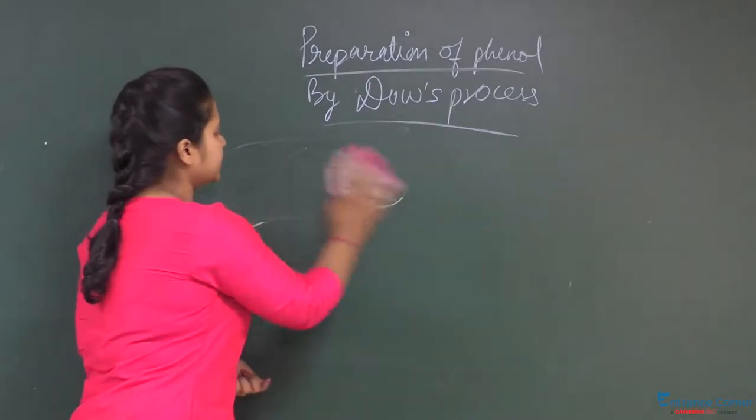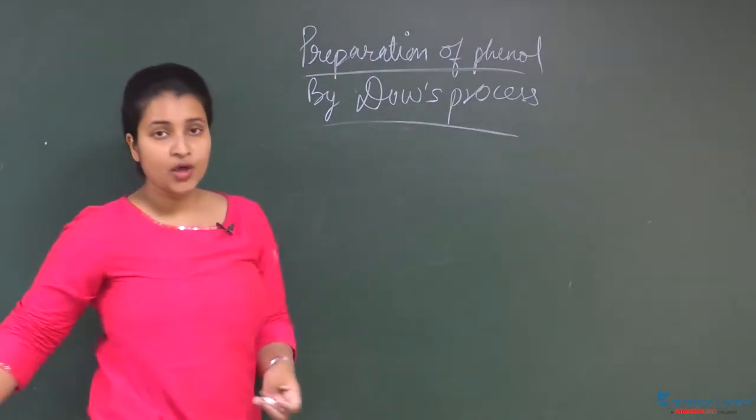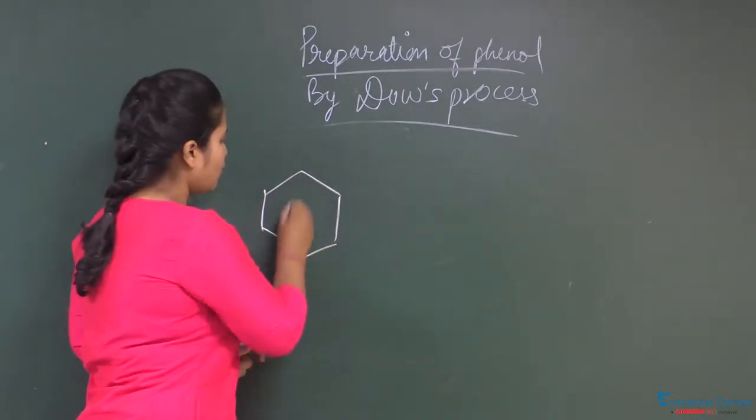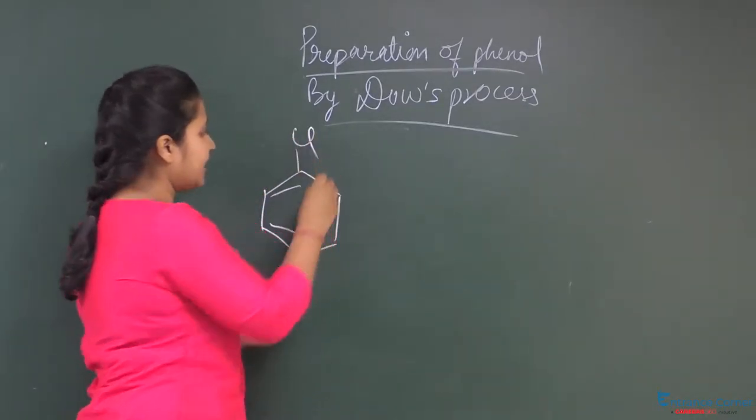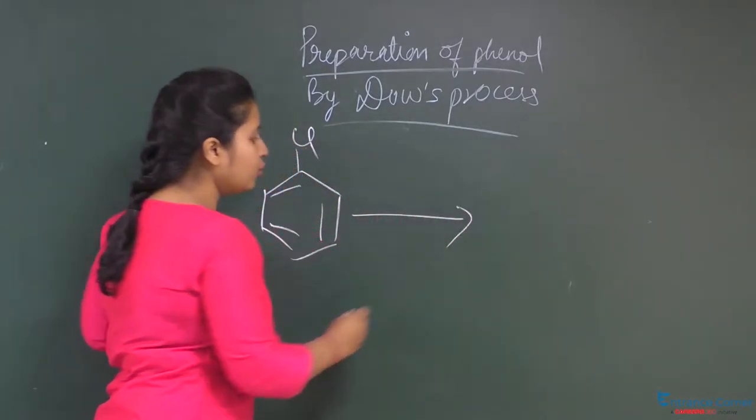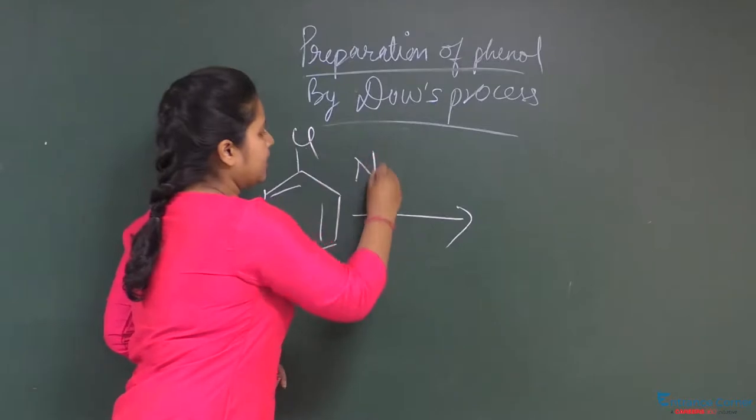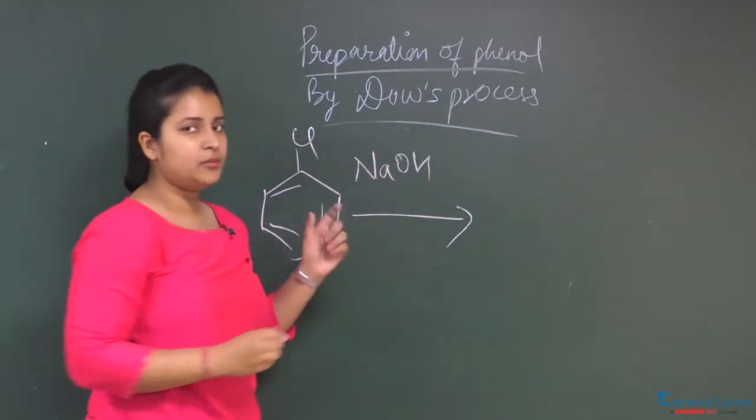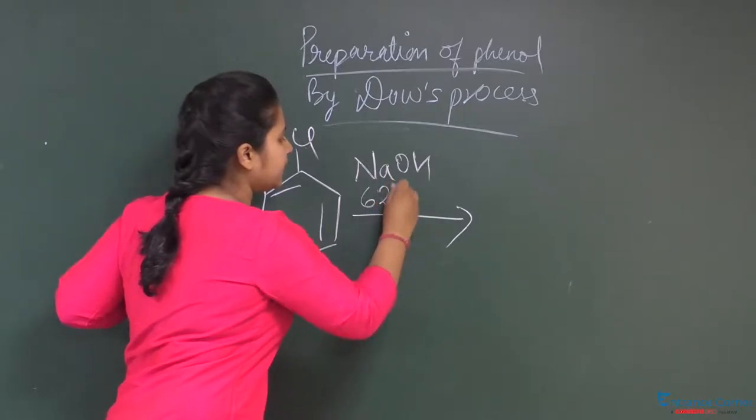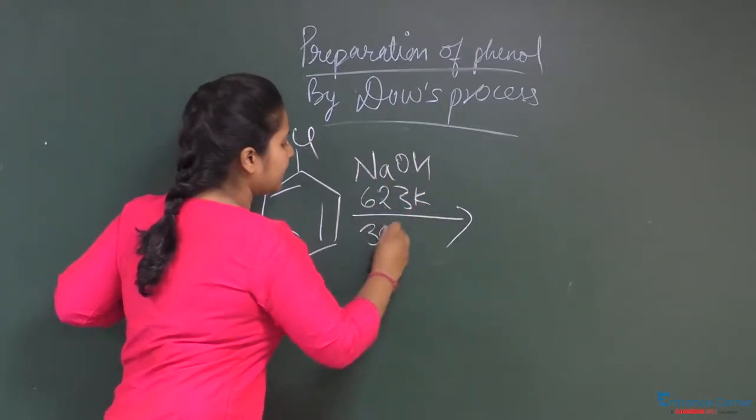What we do in Dow's process is we take chlorobenzene, that is benzene with a chlorine substituent, and we do hydrolysis of it in alkaline medium at 623 Kelvin and 3 atm pressure.